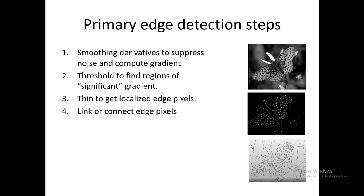Now we can return to the question: how do we fundamentally find edges? It's a multi-step process. First, we do smoothing and compute the gradient using derivatives to suppress noise. Next, we threshold to find the regions of significant gradient. Then we localize the edge pixels, and finally we link or connect those edge pixels. We smooth, threshold, get localized edge information, and then link the edge pixels.